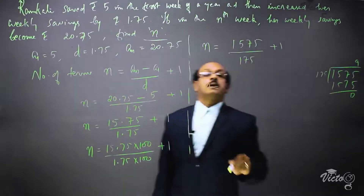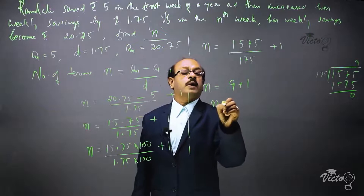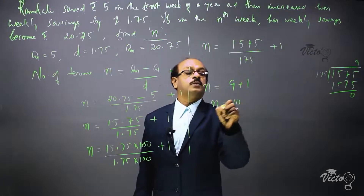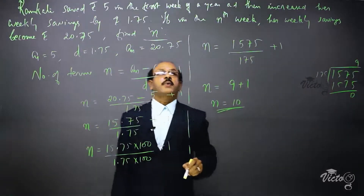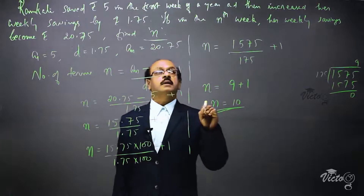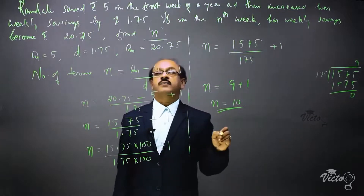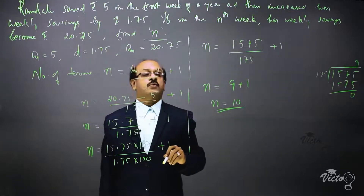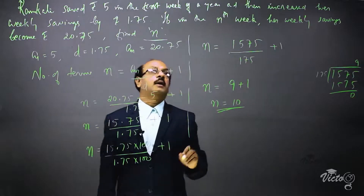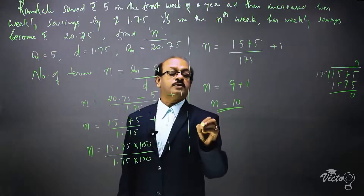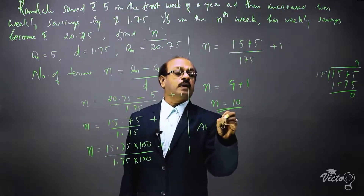So it is 9 + 1, giving us n = 10. We obtained the value of n as 10, meaning in the 10th week her savings become rupees 20.75.